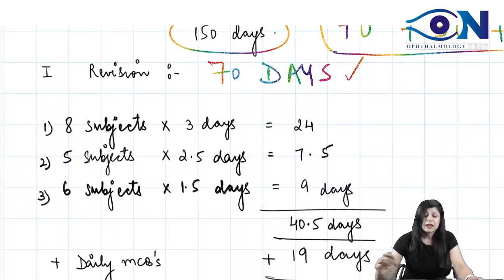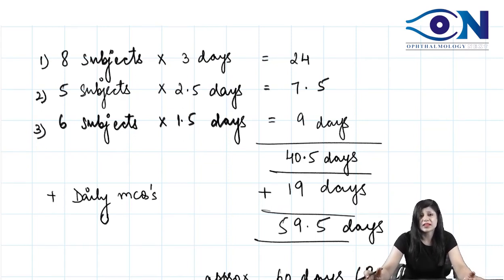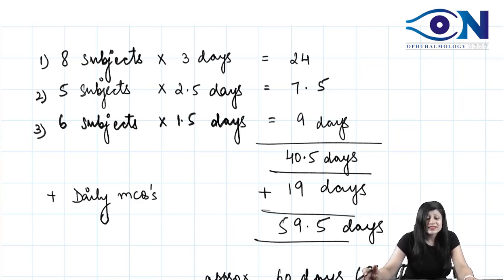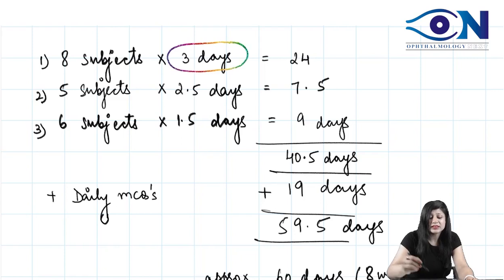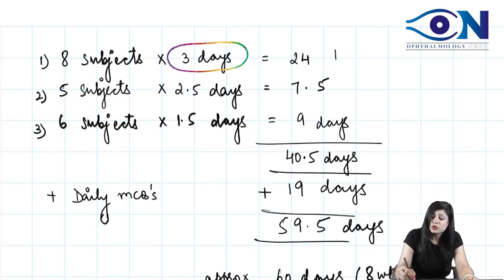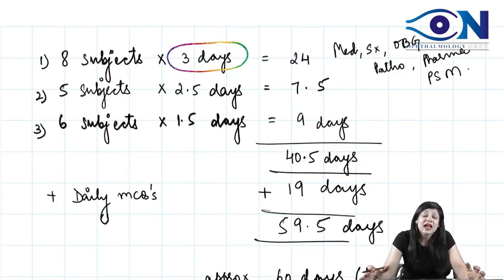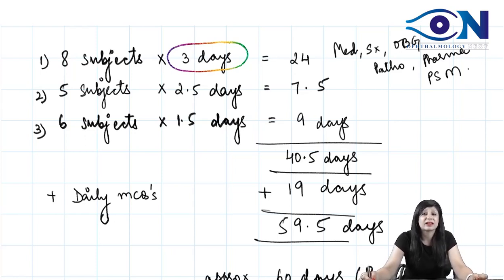In your first revision of 70 days, different subjects require different amounts of days. I have divided eight subjects to be given three days each. These eight subjects are the large subjects — Medicine, OBG, Pathology, Pharmacology, PSM, Anatomy, Surgery — subjects that require more time. You can combine Medicine with Pharma and Pathology for integrated study.